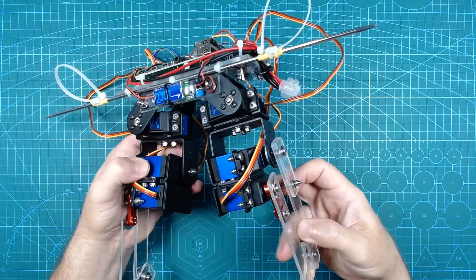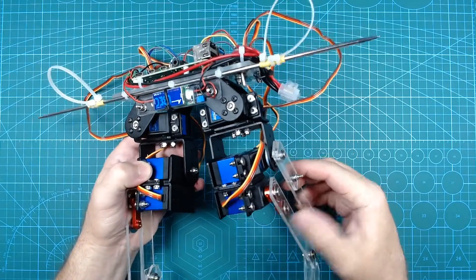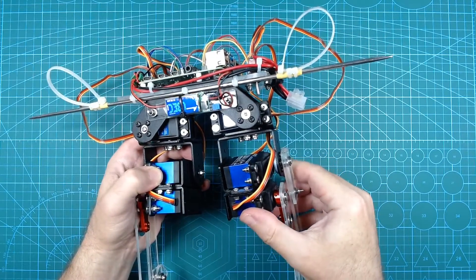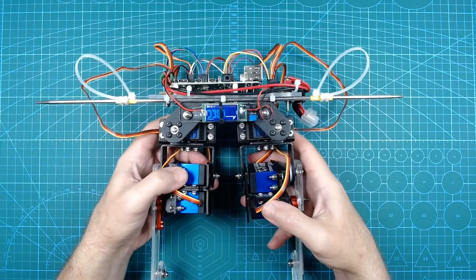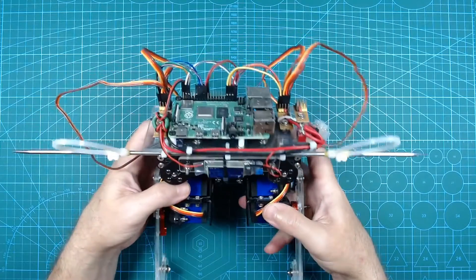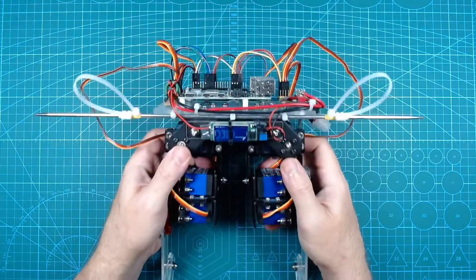So far, I've been using a deep deterministic policy gradient approach, trying to train the legs to balance. Anyway, it's all controlled with a Raspberry Pi. There are three servos per leg.